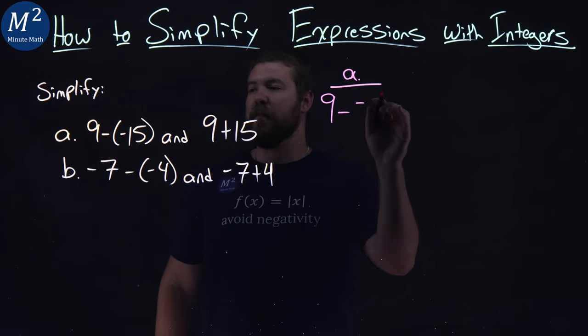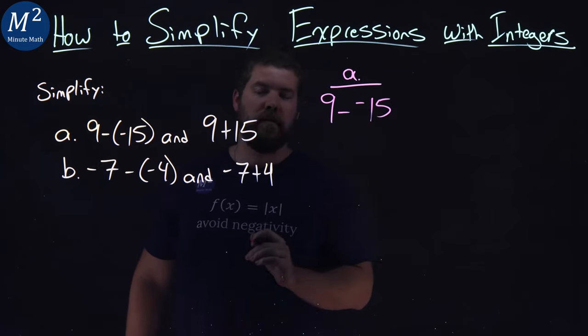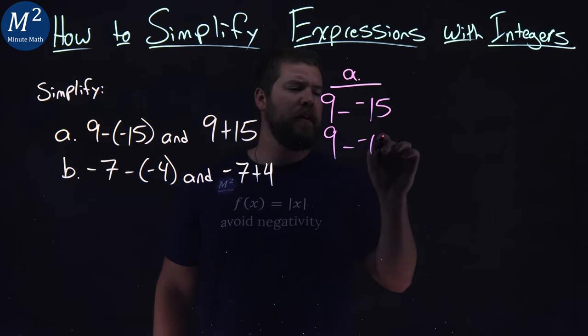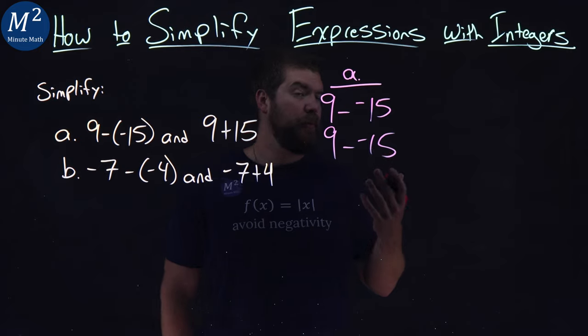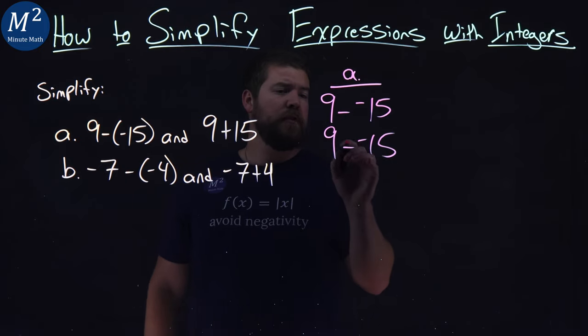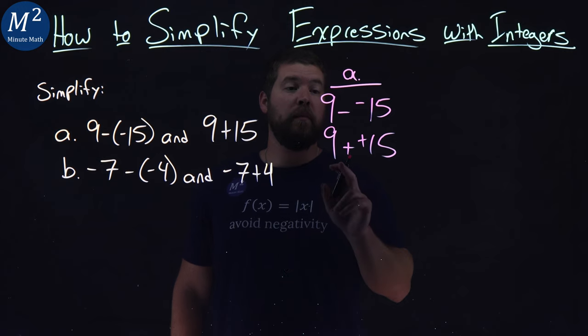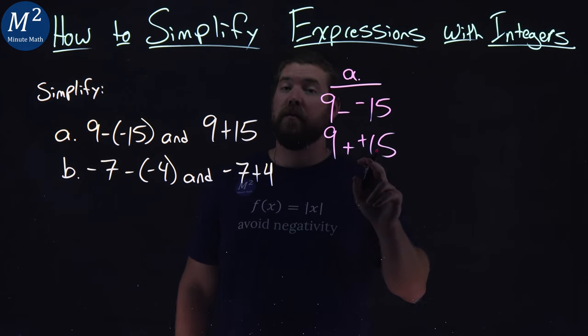9 minus a negative 15. Notice I wrote it without the parentheses here so we can see it. 9 minus a negative 15, if we add what I learned was called zip-zap, two lines, you find that 9 minus a negative 15 is the same thing as 9 plus a positive 15.